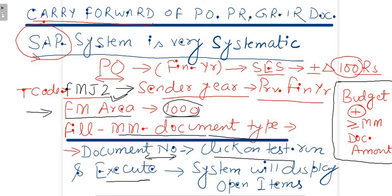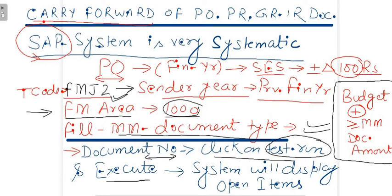Click on Test Run and execute. If any open items are available, the system will display all open items. For example, if a purchase order is created for 100 rupees and 20 rupees is still open, all open line items will be displayed. If you satisfy the budget availability criteria, uncheck the Test Run option and execute the transaction code to proceed with the actual carry forward.